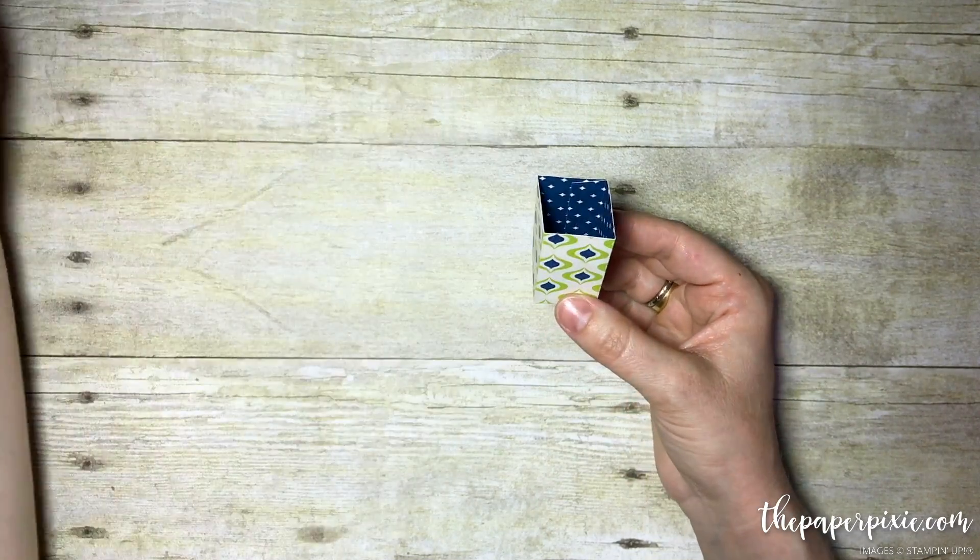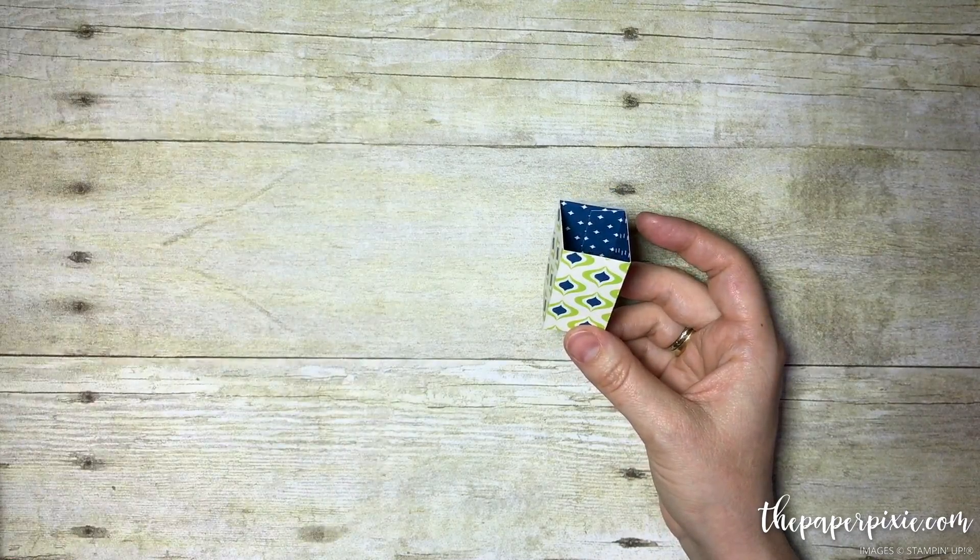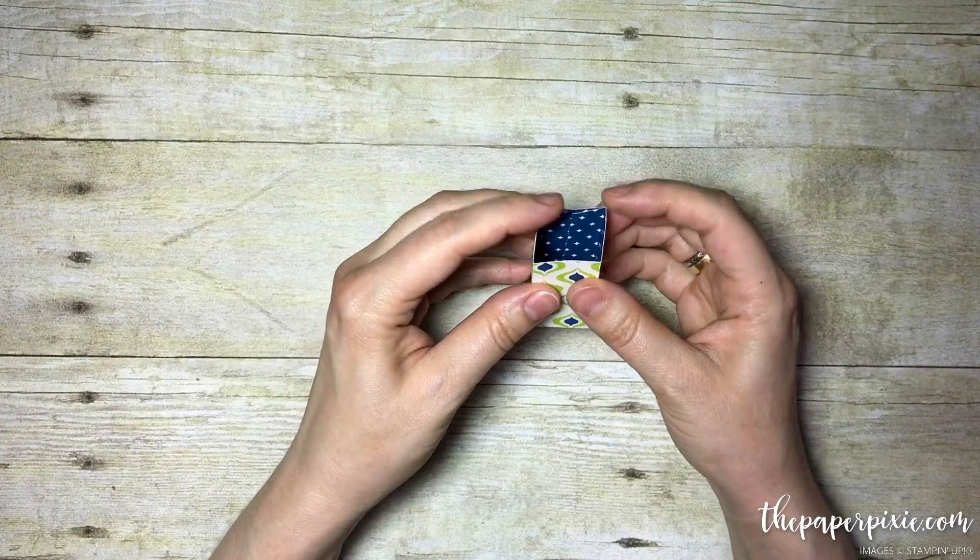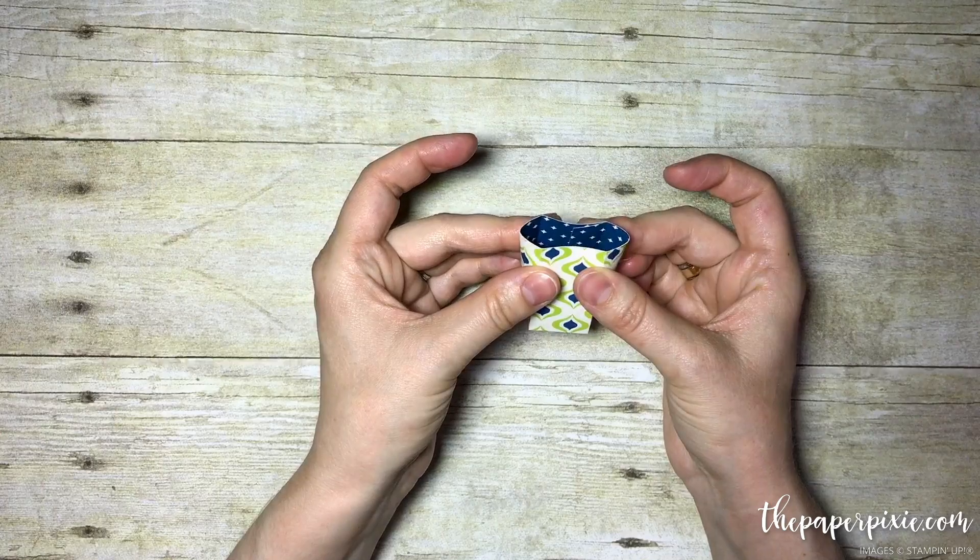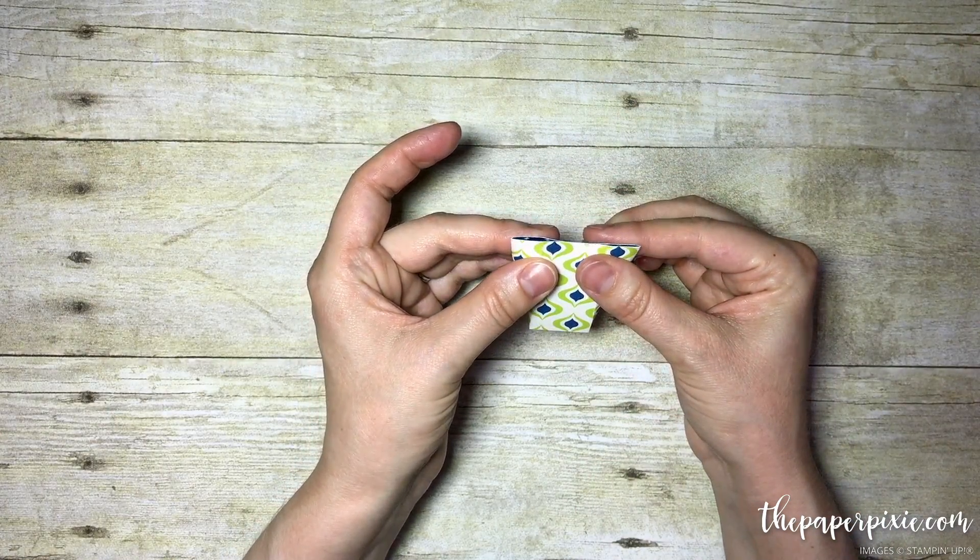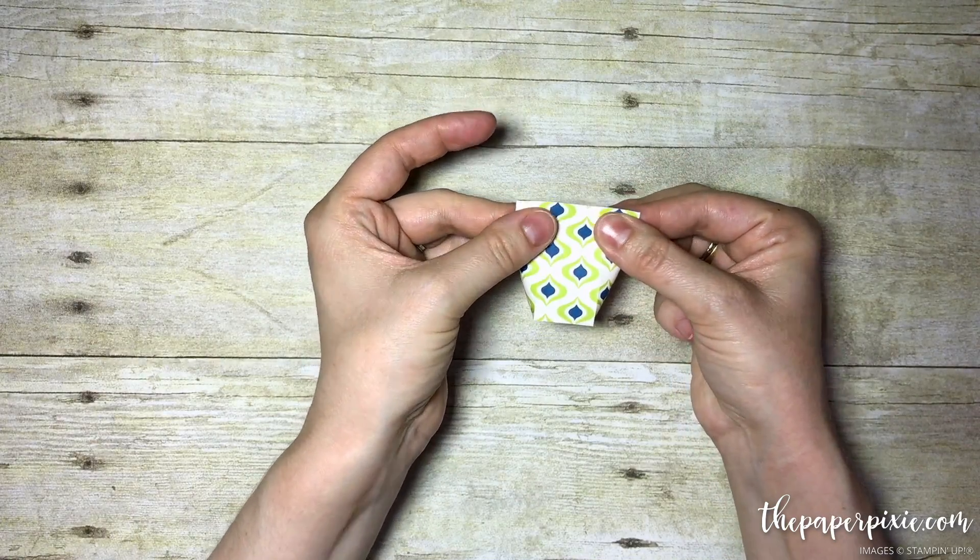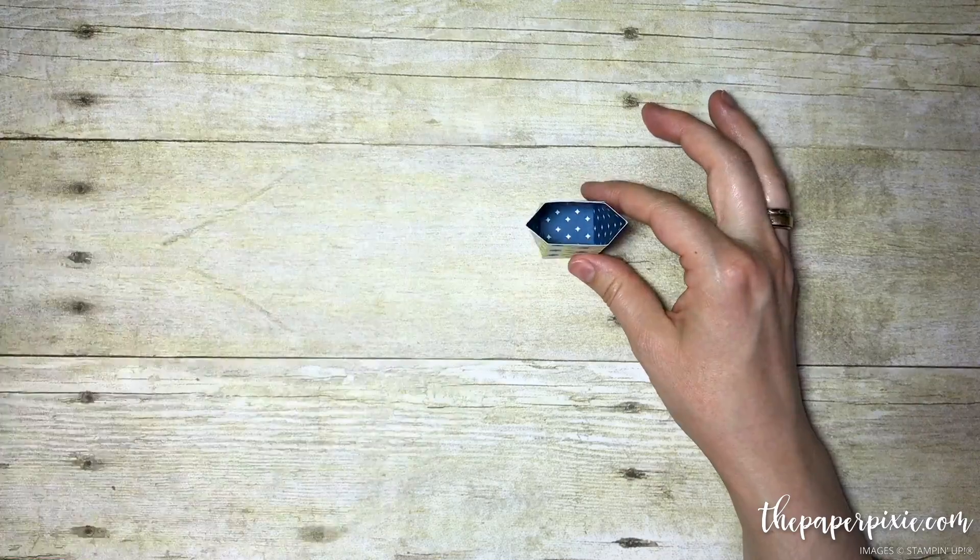This looks nothing like our little container, but the magic is you're going to just pinch these front two and back two score lines together. You just need to pinch it at the top here. Before we close our box, we've got to put in our chocolate.